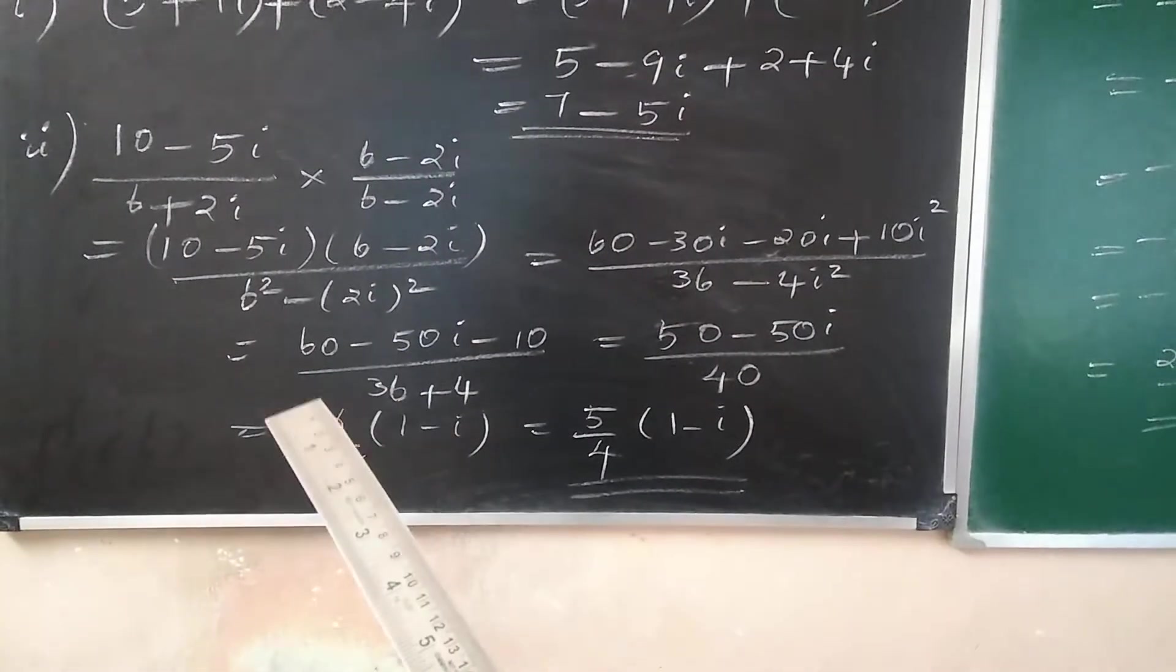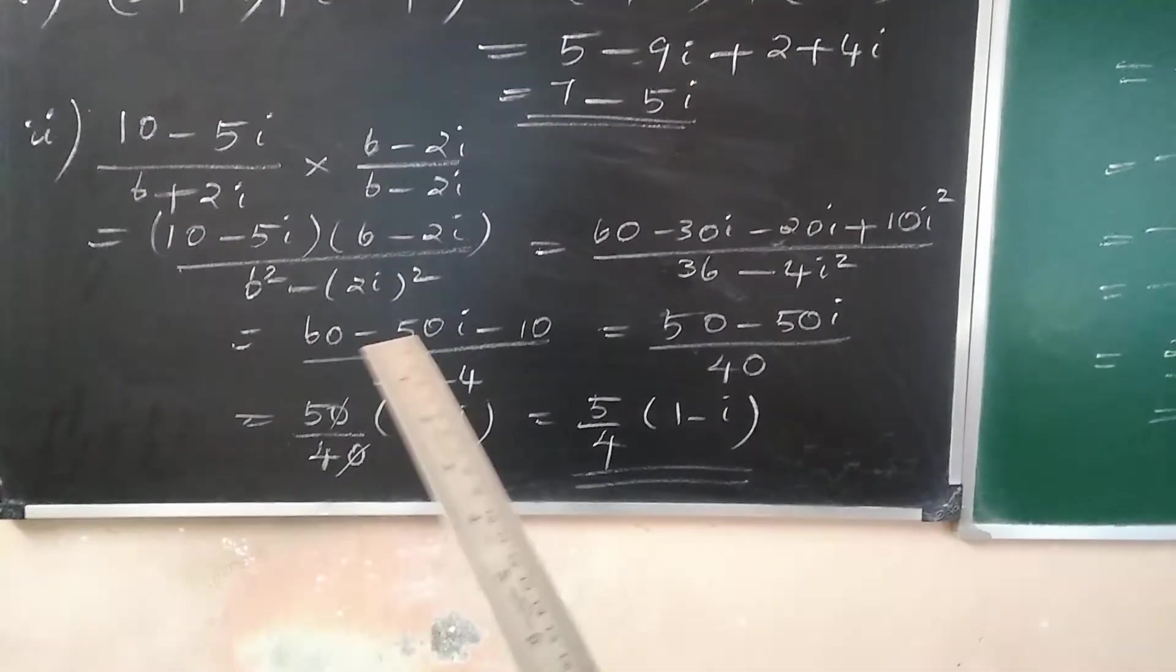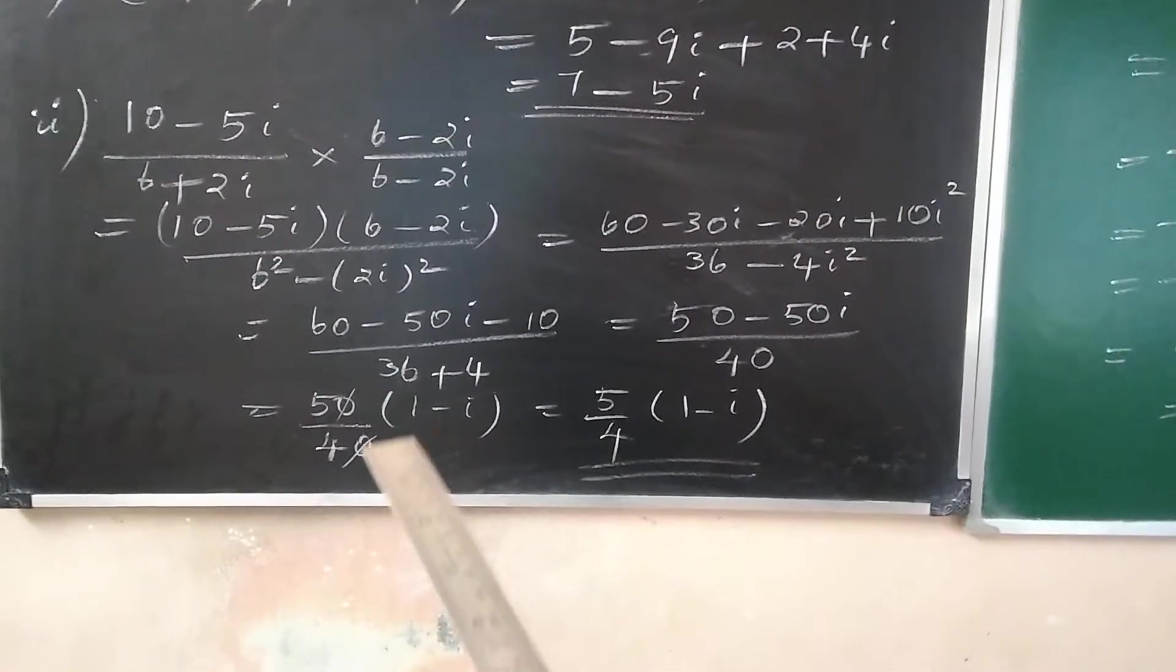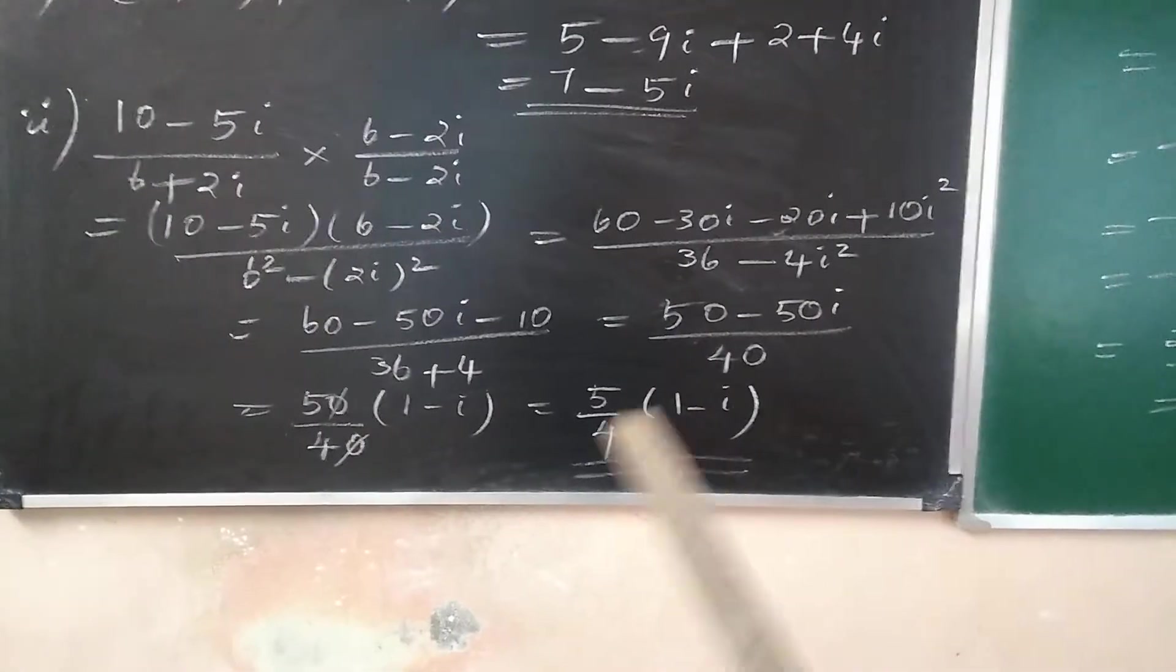We take 50 common from the numerator and there is a 40 in the denominator. They become 5 by 4 and there is a 1 minus i in the bracket.